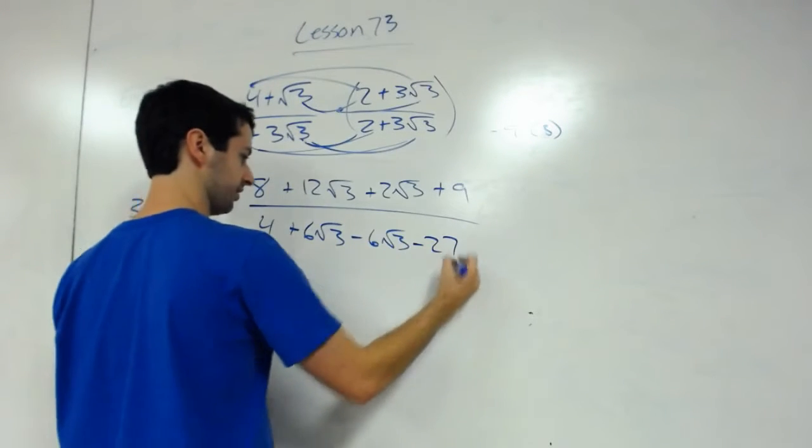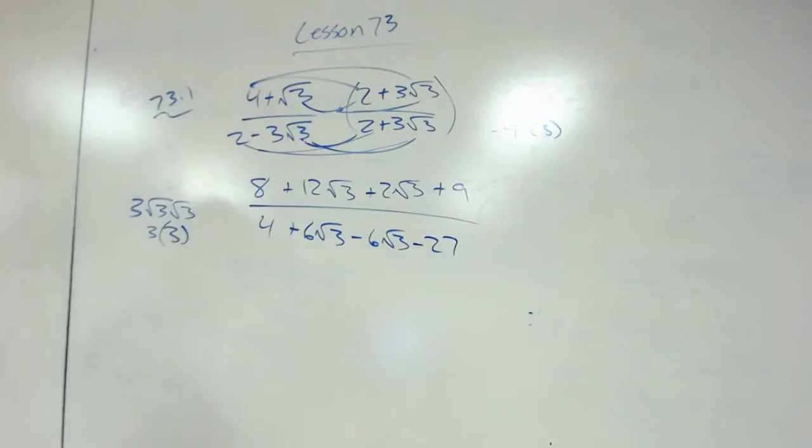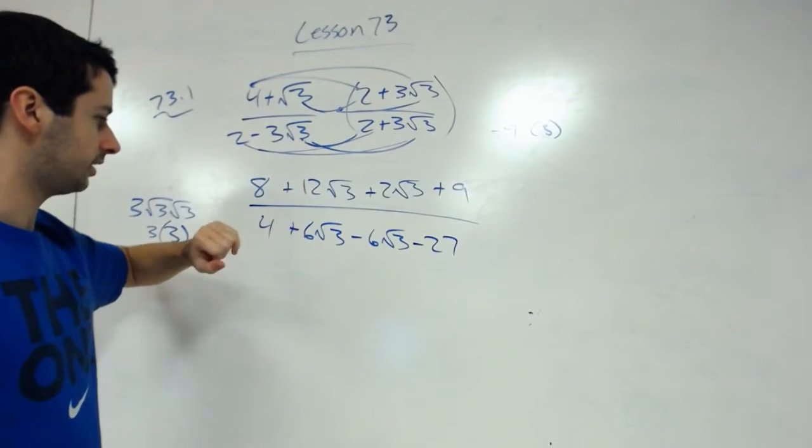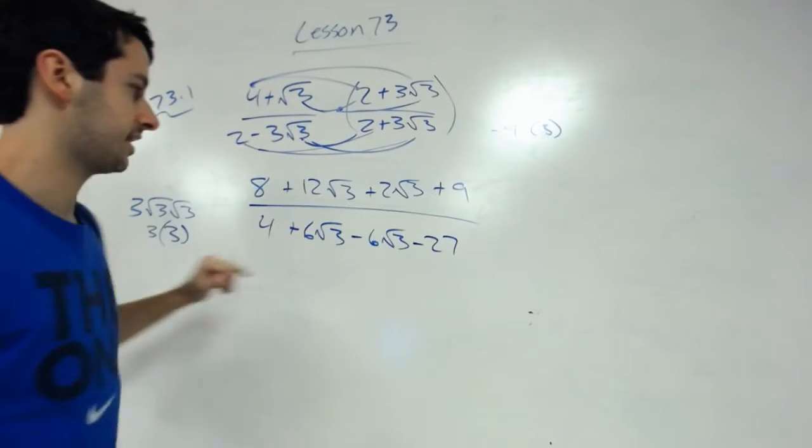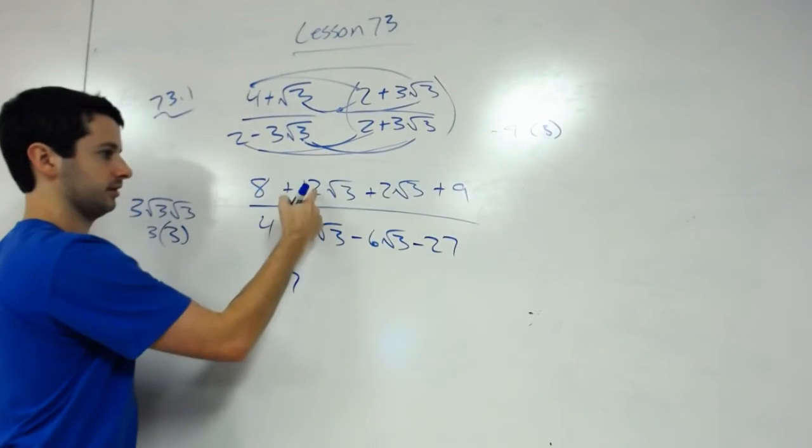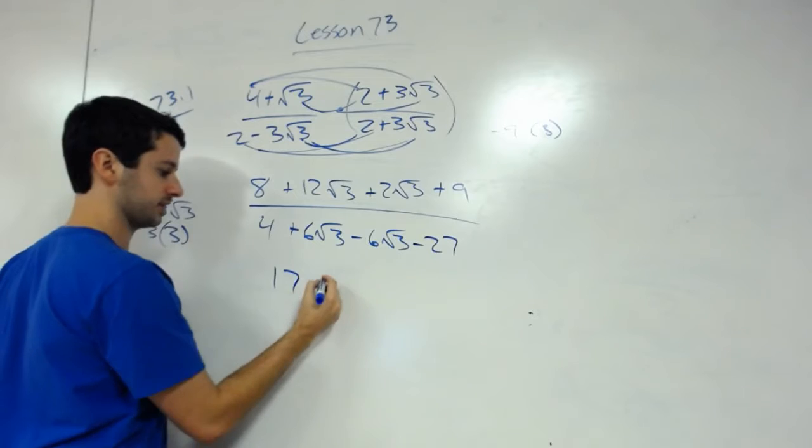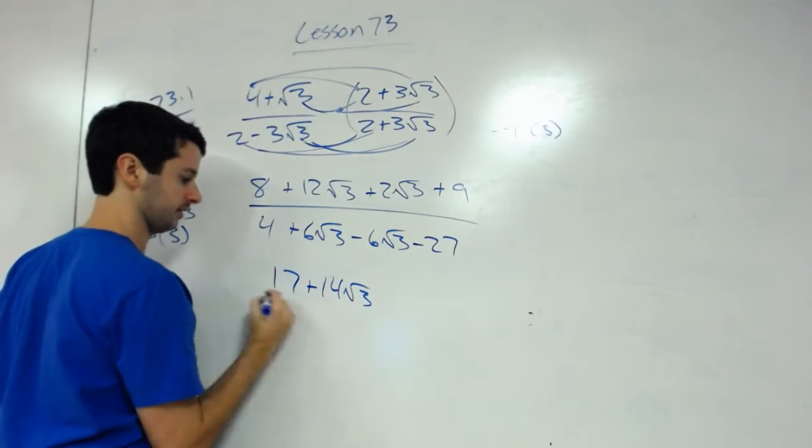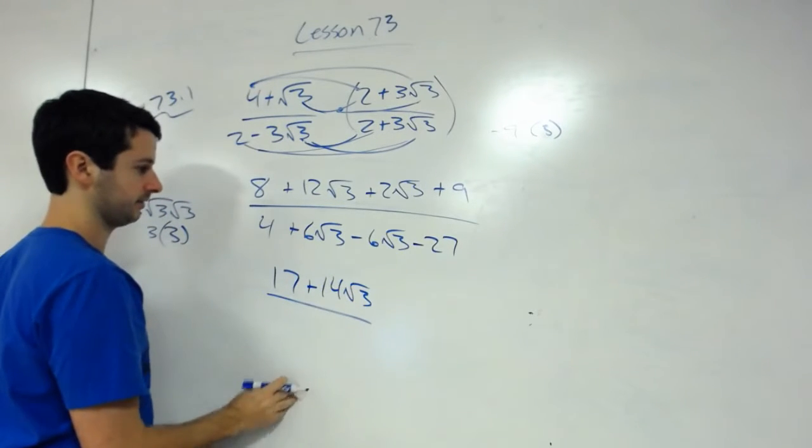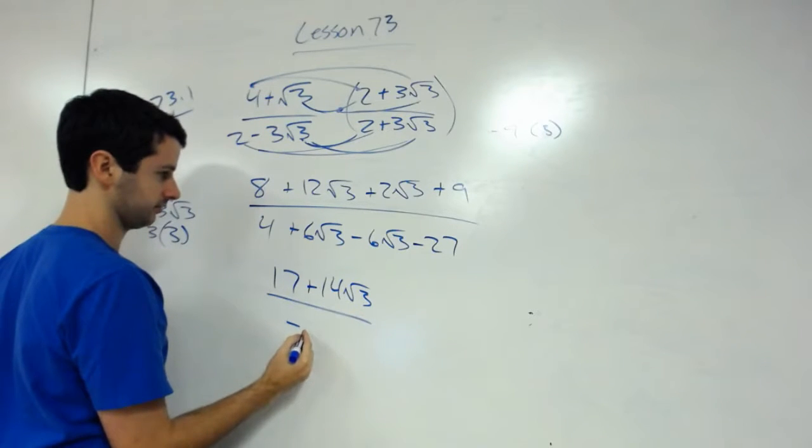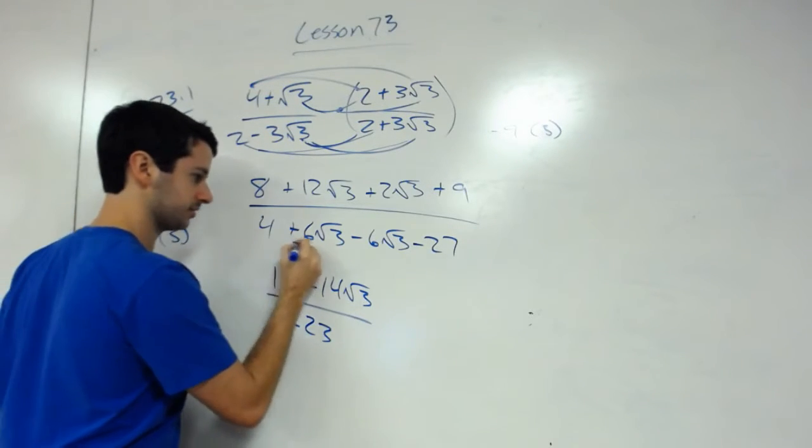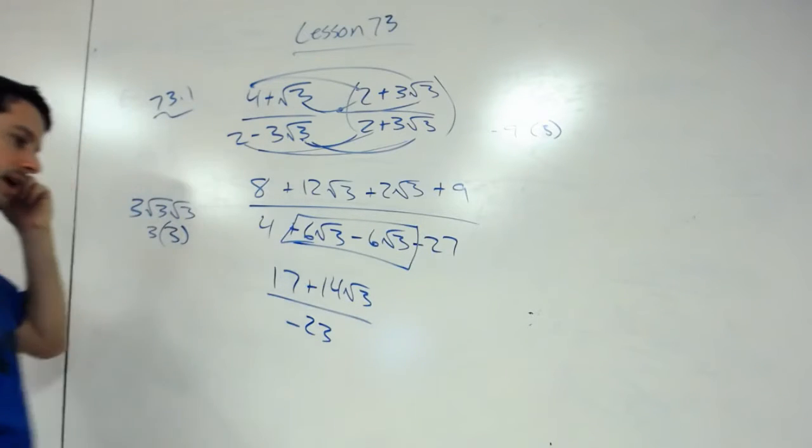And that would be negative 27. Hopefully followed that there, but we just multiplied those. Now we simplify the top: 8 and 9 is 17, 12 and 2 is 14√3, divided by 4 minus 27 is negative 23. Notice right here you have a positive and a negative, you have an opposite.